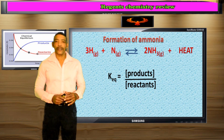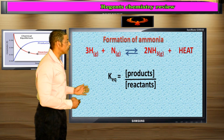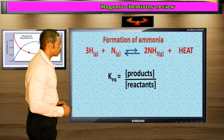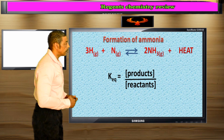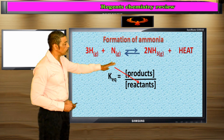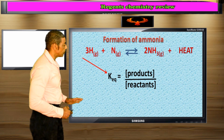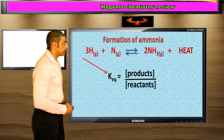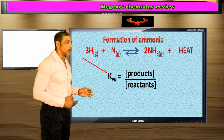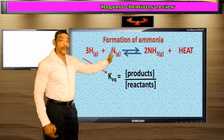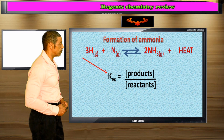When performing calculations involving equilibrium reactions, one should first write an equilibrium expression. In an equilibrium expression, the concentration of the products are written in the numerator and the concentration of the reactants are written in the denominator. The value of K-EQ will indicate whether the forward reaction or whether the reverse reaction is favored.